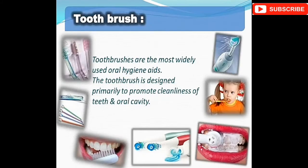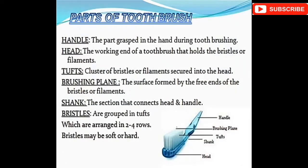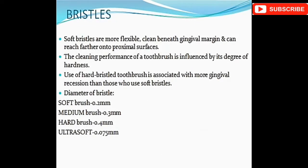Toothbrushes are the most widely used oral hygiene device. The parts of a toothbrush are the handle, head, tufts, brushing plane, shank, and bristles. The bristles are very soft and flexible, and can clean beneath the gingival margin and reach further onto the proximal surfaces.